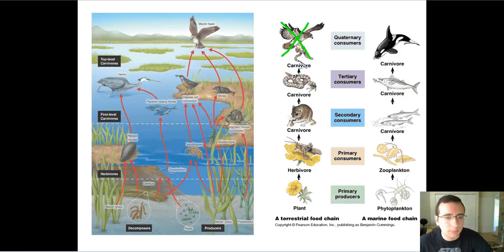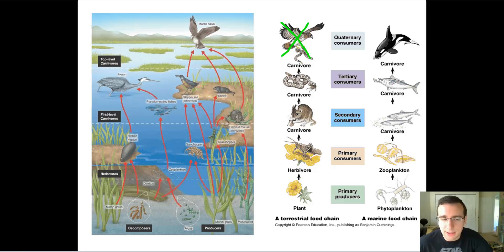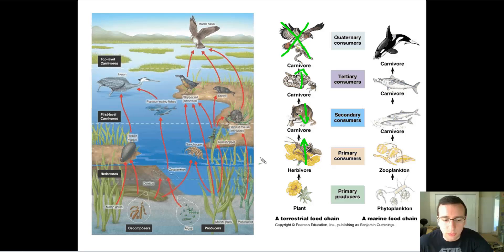If you do that, there's going to be more of the snake because the snake is no longer being eaten. But since the snake is not being eaten, you're going to have less of the animal below it — those numbers go down even though the snake numbers went up. But if those numbers went down, then the herbivore numbers will go up, which means the number of producers will go down.